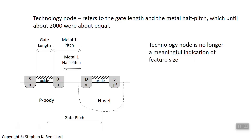The technology node is given in units of nanometers and refers to two key lengths in an IC chip: the gate length and the metal pitch, which you can think of as the separation between neighboring MOSFETs.